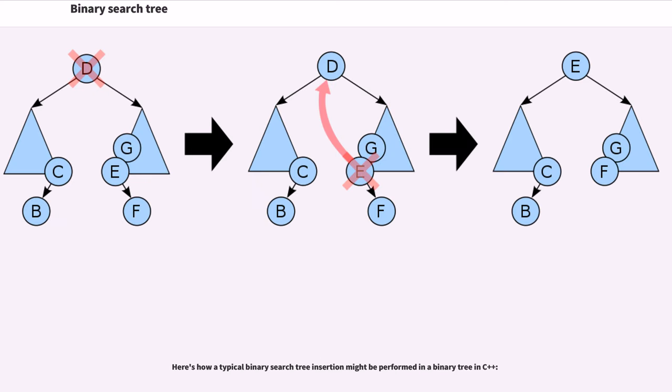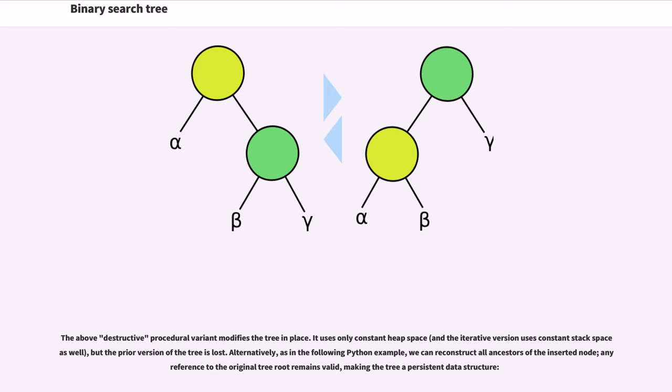Here's how a typical binary search tree insertion might be performed in a binary tree in C++. The above destructive procedural variant modifies the tree in place. It uses only constant heap space, and the iterative version uses constant stack space as well, but the prior version of the tree is lost. Alternatively, as in the following Python example, we can reconstruct all ancestors of the inserted node. Any reference to the original tree root remains valid, making the tree a persistent data structure.